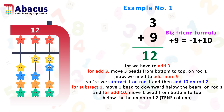Let's summarize so you get a better idea. First we added 3 on rod 1. Then for 9 we used the big friend formula: plus 9 is equal to minus 1 plus 10 — subtract 1 on rod 1 and add 10 on rod 2. It's so simple.